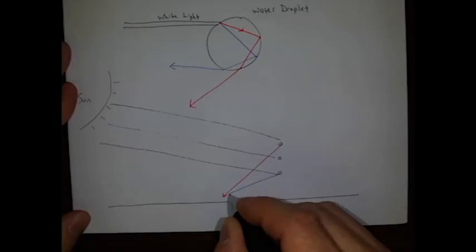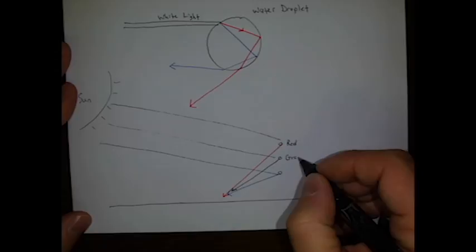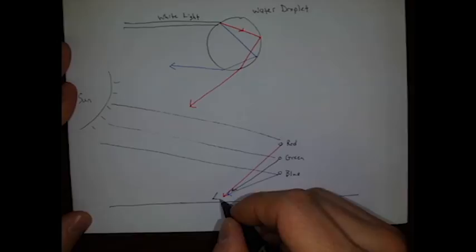This one down here is going to bend a lot and is going to come down to the ground. And I don't have a green pen. This one's going to bend somewhere in between. And so this droplet is going to appear red when I view it. This one green. And this one blue. When viewed by my eye, I will see the rainbow.